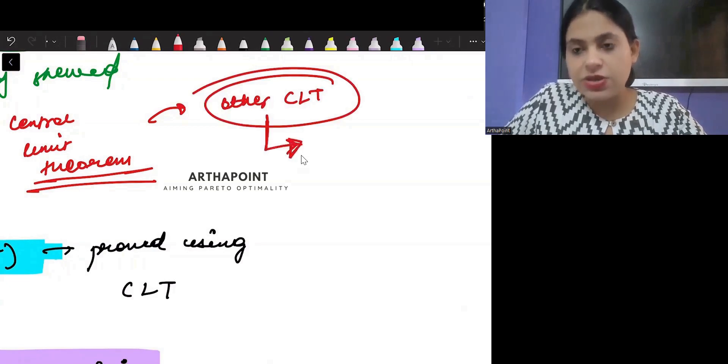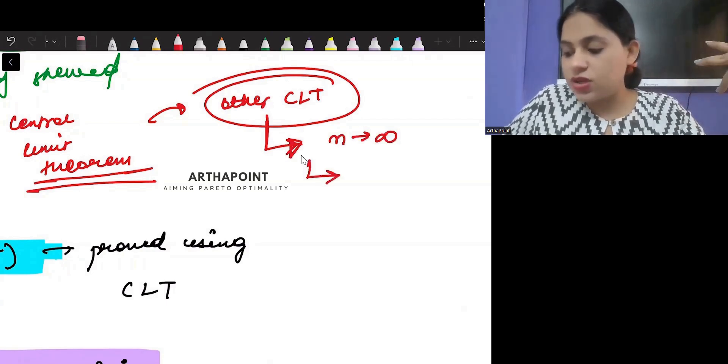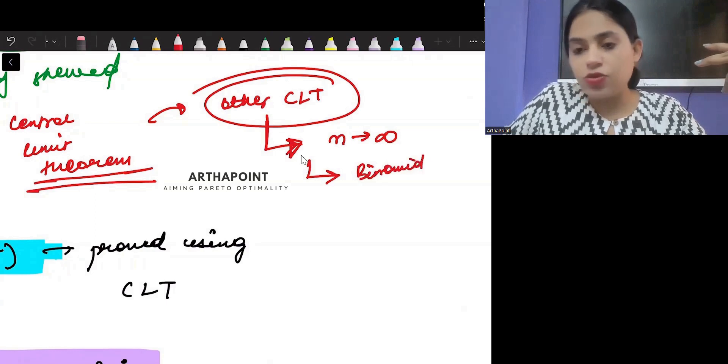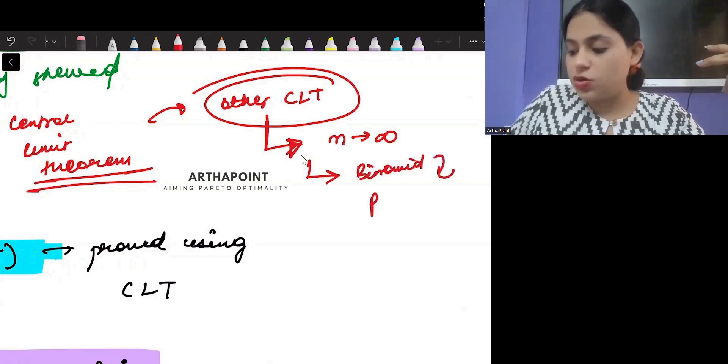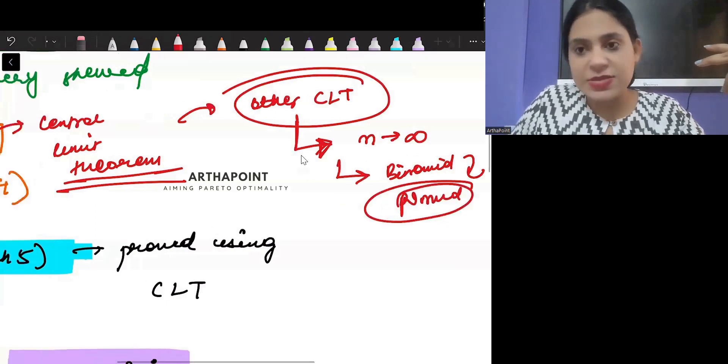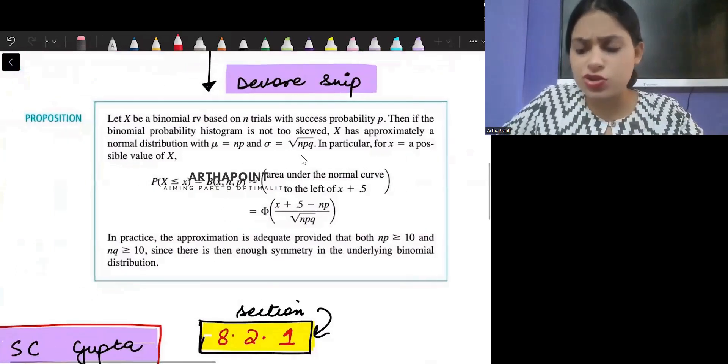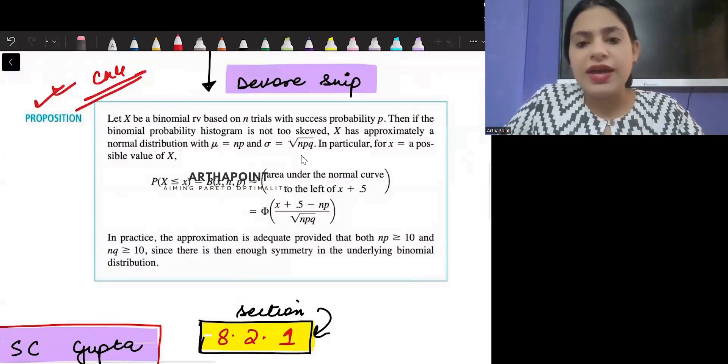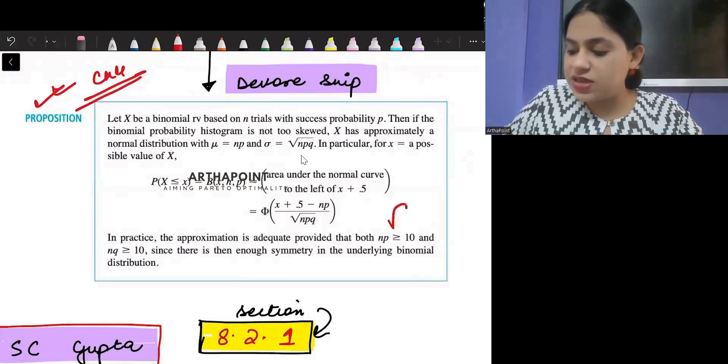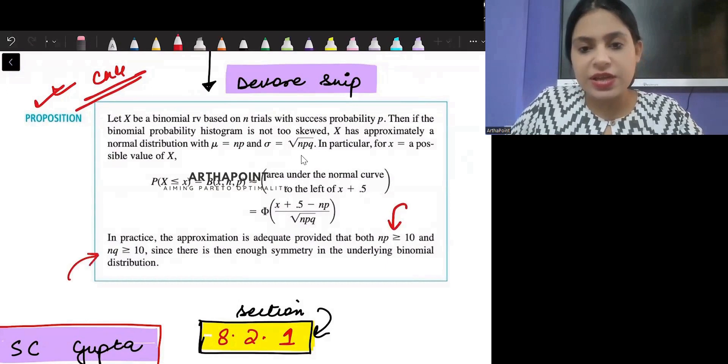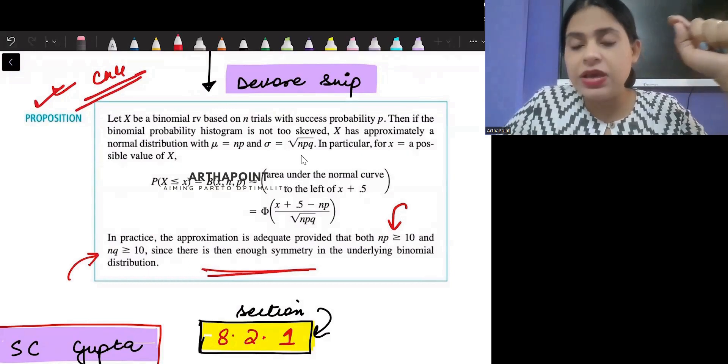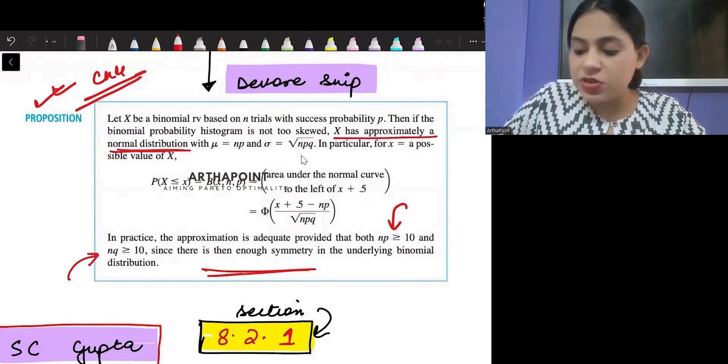And in other applications of central limit theorem, they have proved that if n is large enough, then binomial can be approximated with a normal distribution. This has been proved in Devore. I have taken this proposition from Devore chapter 4, and you can clearly see that it says that if NP is greater than equal to 10, or NQ is greater than equal to 10, and there is symmetry in the binomial parameter p, approximately 0.5, it is not very skewed.